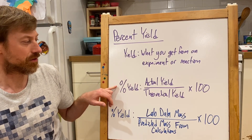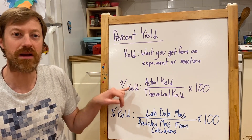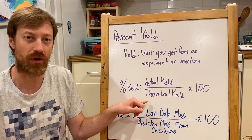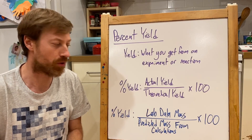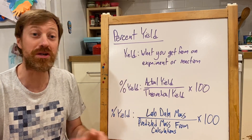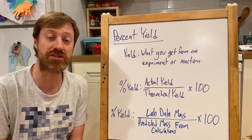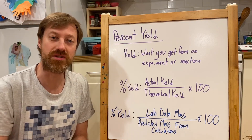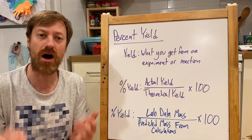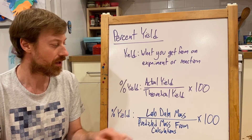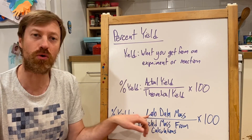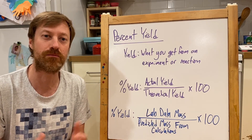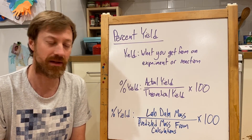The percent yield compares the actual yield to the theoretical yield. So let's talk about what those are. The actual yield is what you do actually get — it's the actual lab data you receive. Often in chemistry we measure it by weighing, so it will be the actual weighed mass that you get from putting something on a balance.